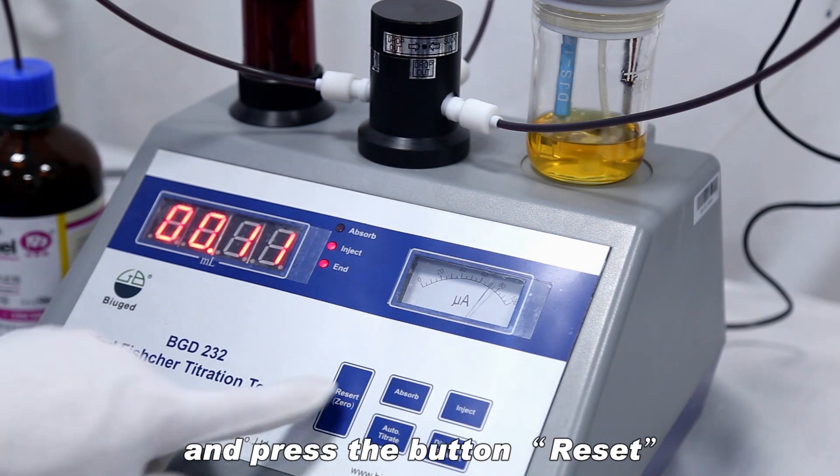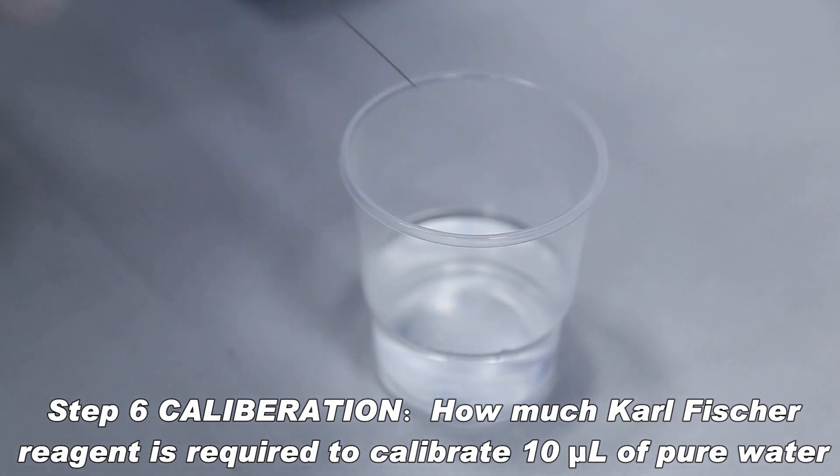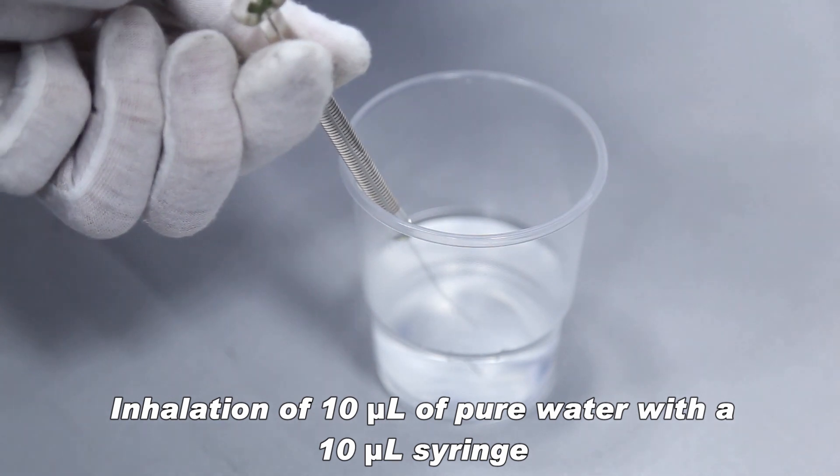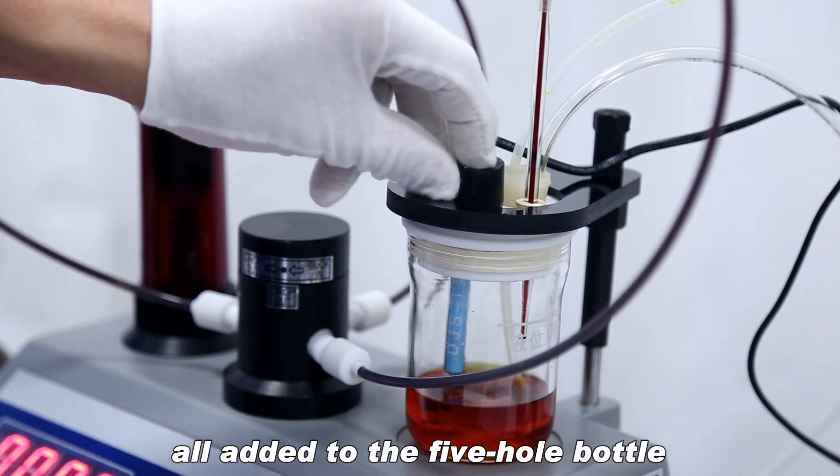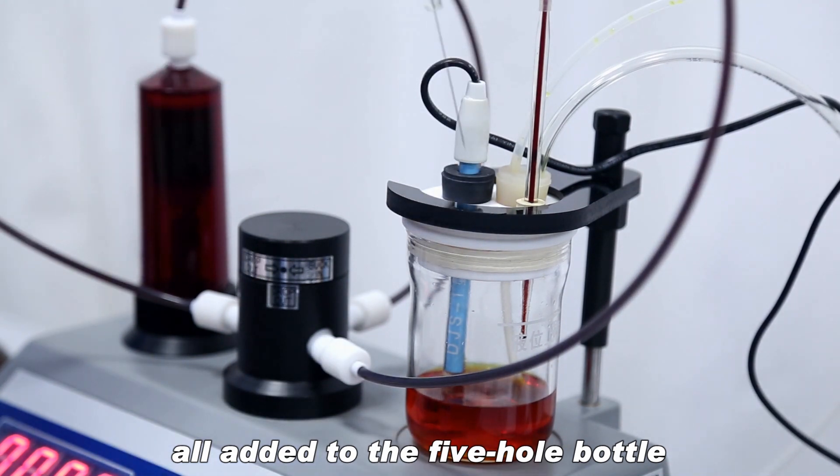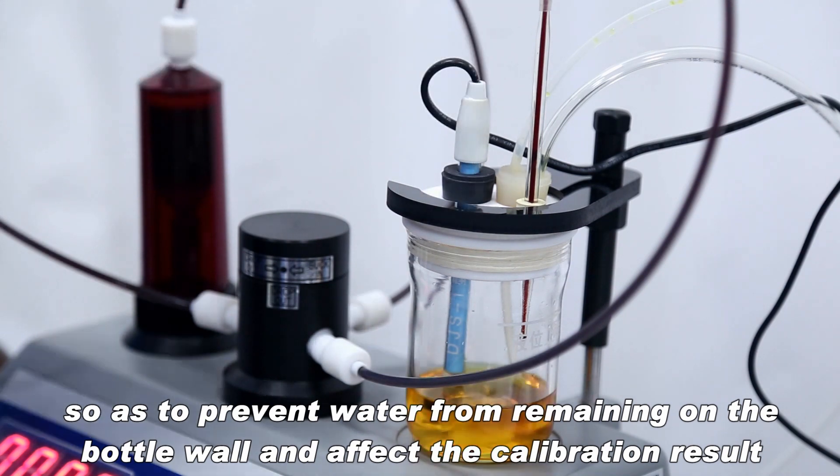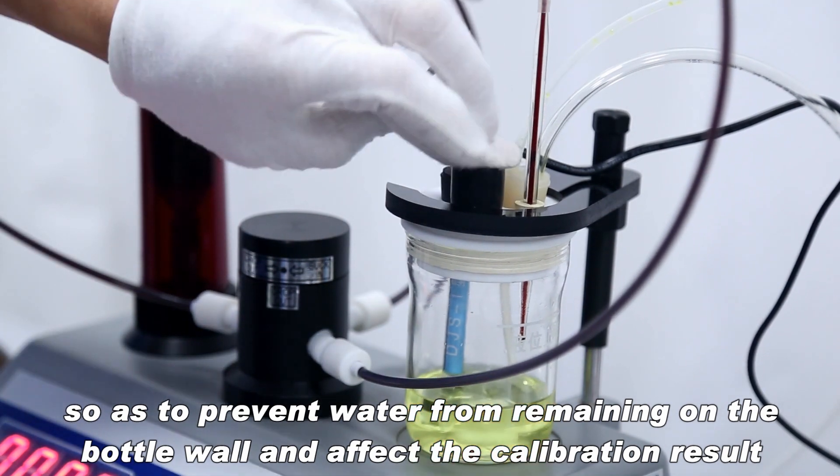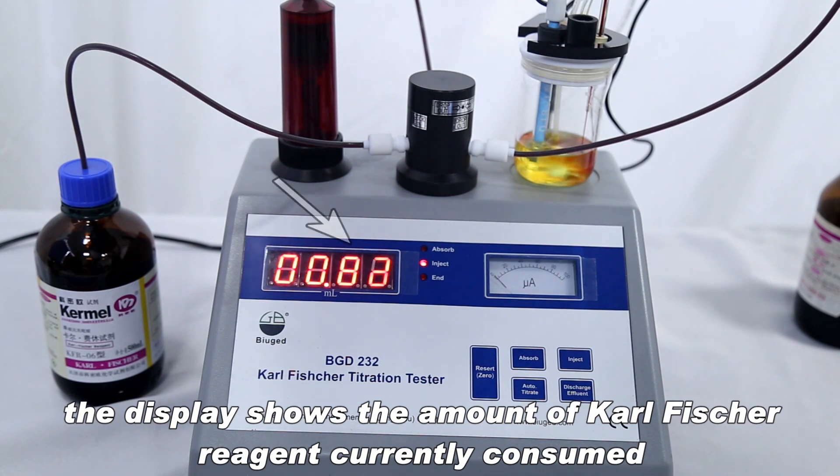Press the button reset. Calibration: how much Karl Fischer reagent is required to calibrate 10 µL of pure water? Inhalation of 10 µL of pure water with a 10 µL syringe, all added to the 5-hole bottle. Note that not to drip onto the bottle wall when dropping, so as to prevent water from remaining on the bottle wall and affect the calibration result. Press the titrate button and the instrument starts titration. The display shows the amount of Karl Fischer reagent currently consumed.